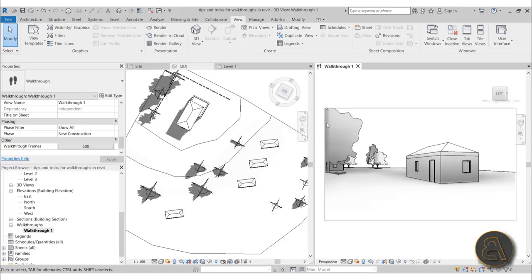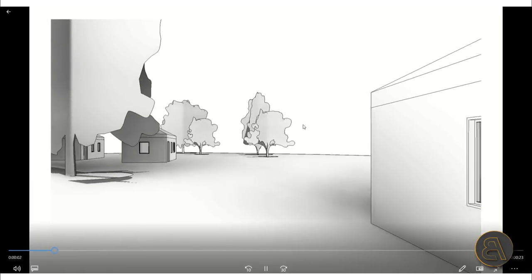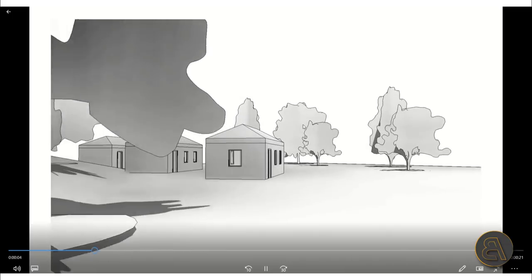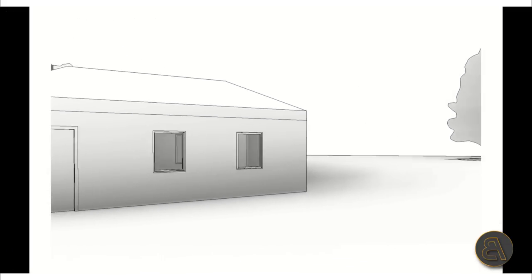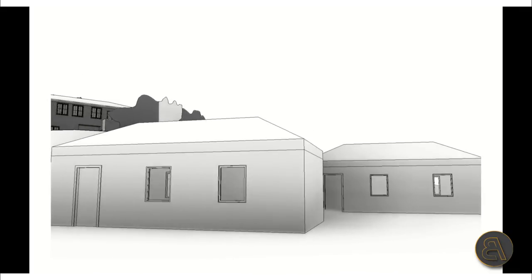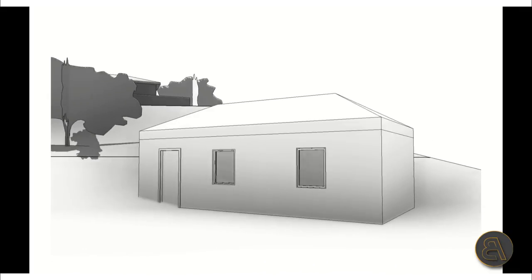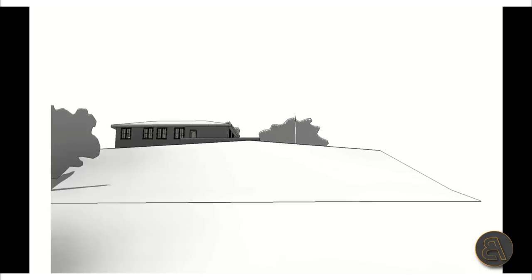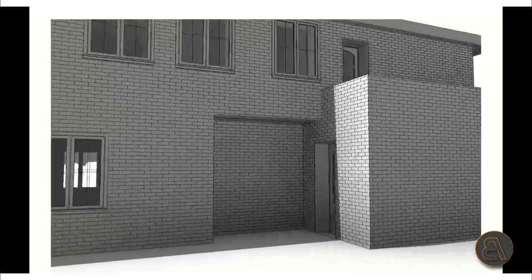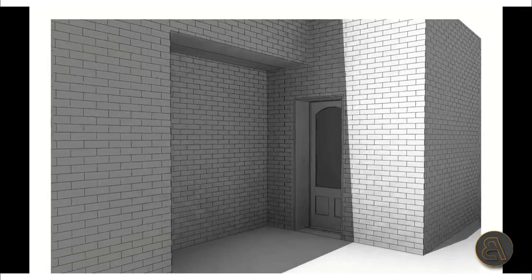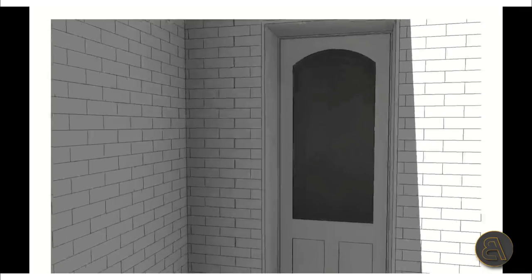Once rendering is complete, minimize Revit and you'll find the file on your desktop. Open it up and there we go — we have the walkthrough playing. It moves at uniform speed past the three houses, then speeds up a little bit as planned, then slows all the way down and slowly arrives at the entrance of the house. It looks great.